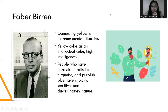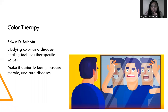This is Faber-Birren. He made a statement about connecting yellow with extreme mental disorder. Yellow color is associated with high intelligence. People who have narcissistic traits like turquoise, purplish blue, and have a feeling sensitive and discriminatory about nature.